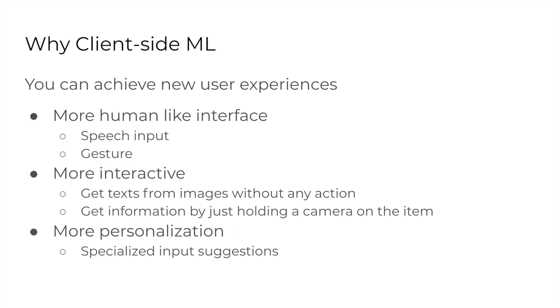The client-side ML can achieve new user experiences — it can achieve a more human-like interface. In Google Assistant and smart speakers, you can request something to the device by speech, the same as talking to a human. More interactive experience can be achieved too. In iOS Live Text, you can get text directly from an image. In Mercari Lens, you can get information by just holding a camera on an item. It can also help personalize the application — in Google IME, suggestions are personalized by learning your input without uploading the text. The suggestion model is trained on your device, so your privacy is protected.